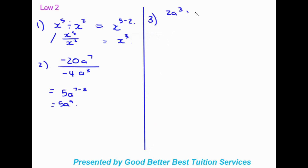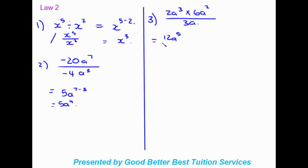The last example for law two combines law one and law two: two a to the power of three times six a to the power of two, divided by three a. On the top, two times six gives 12 and three plus two gives a to the power of five, so we have 12a to the power of five. Dividing by three a: 12 divided by three gives four, and five minus one gives four. Final answer: four a to the power of four.